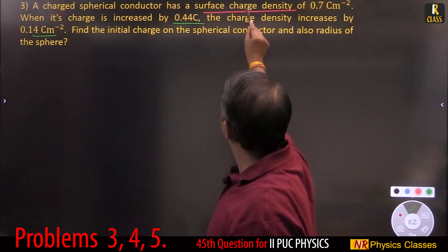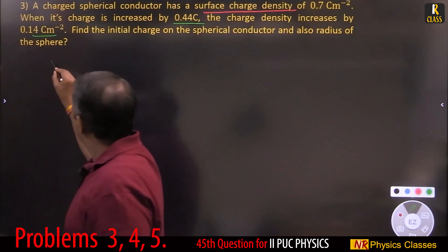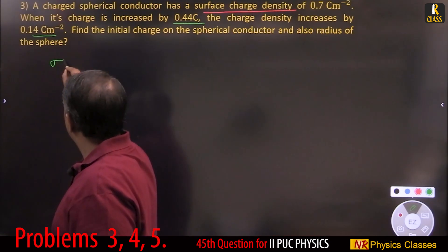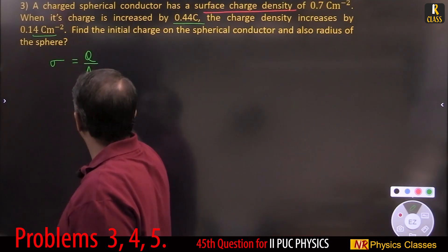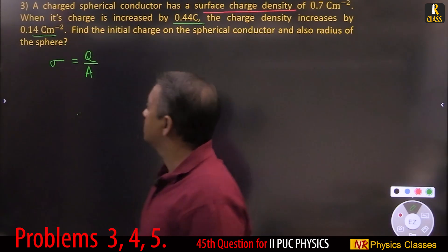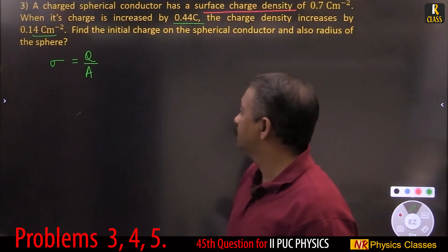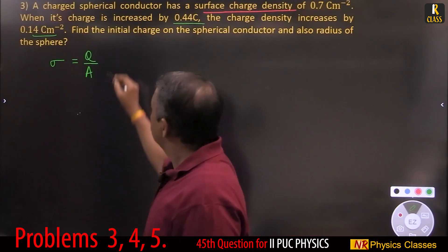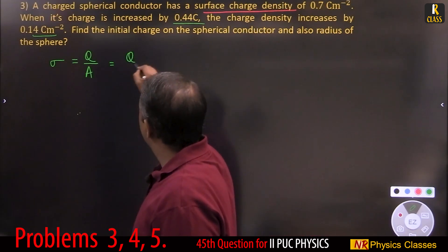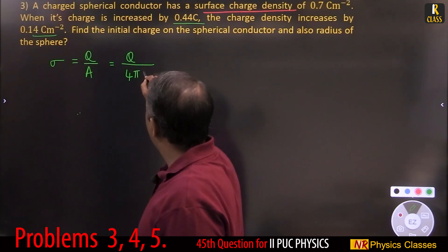This is surface charge density. The formula for surface charge density is: sigma equals charge divided by area, which is Q divided by 4 pi r squared.